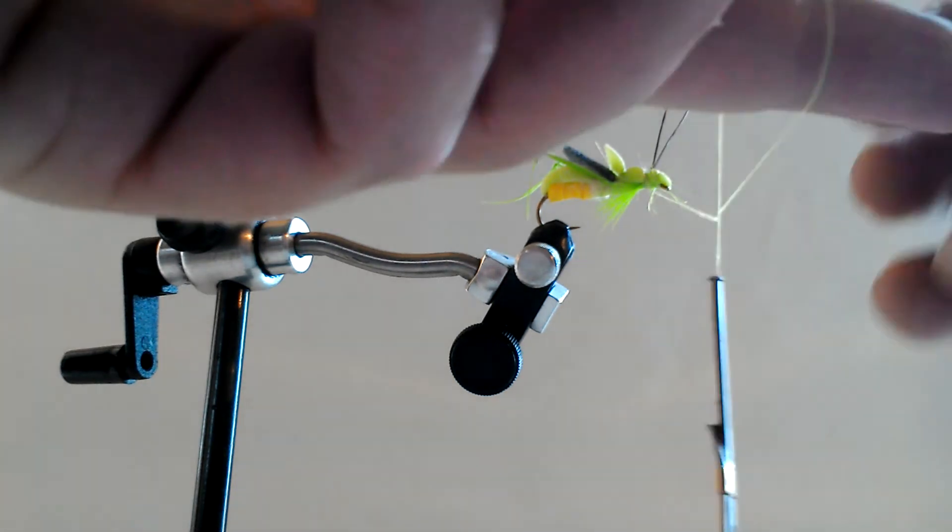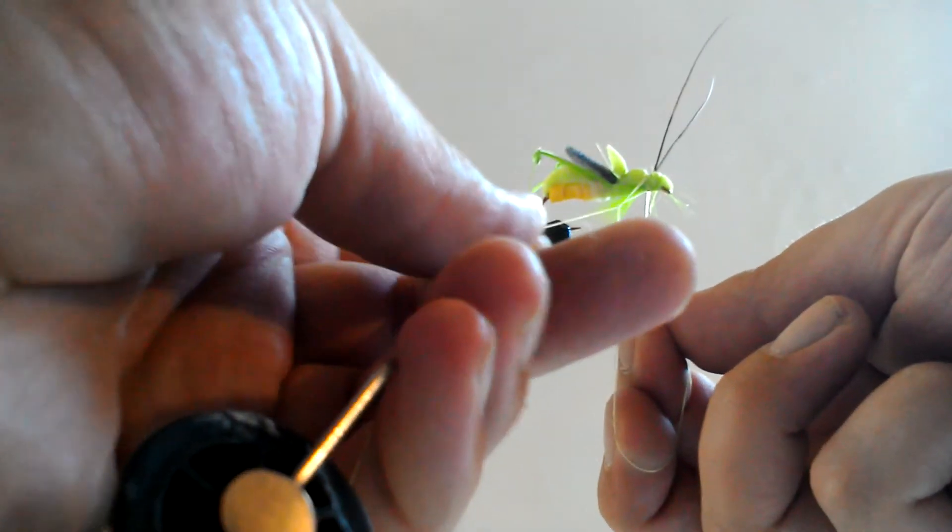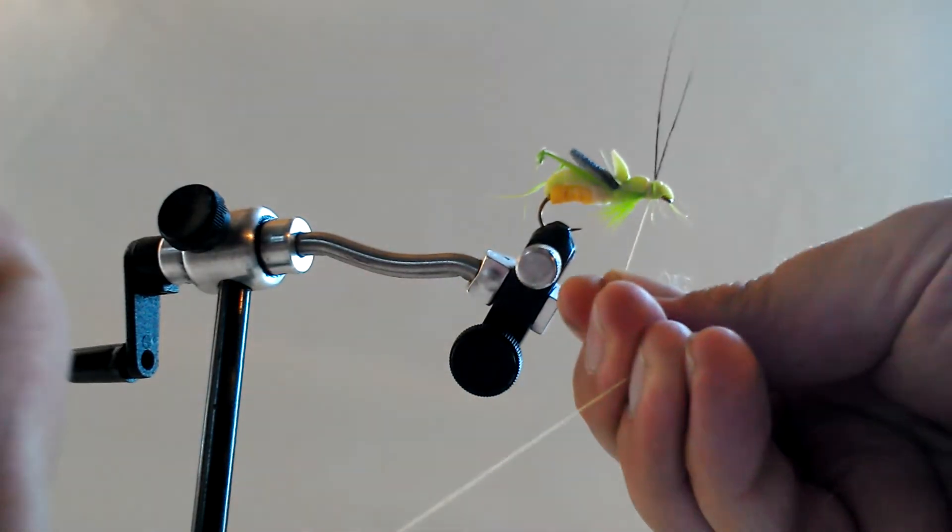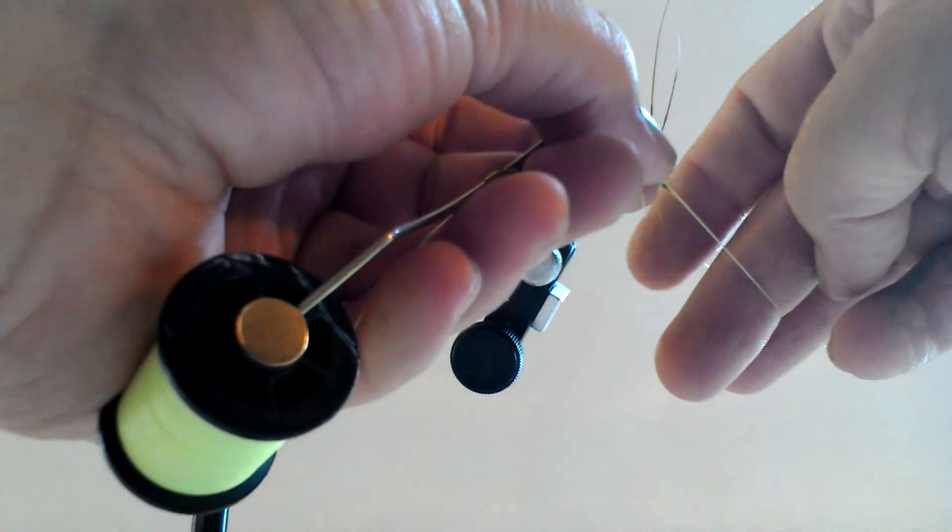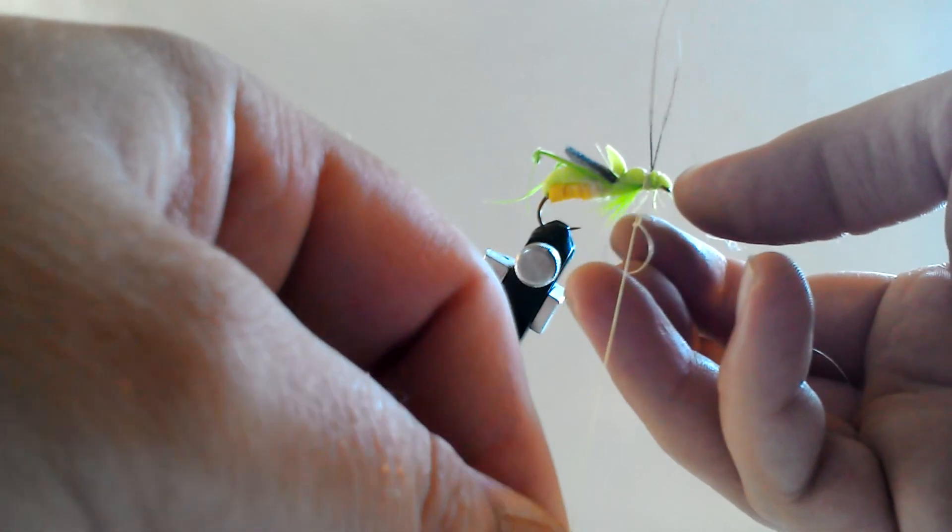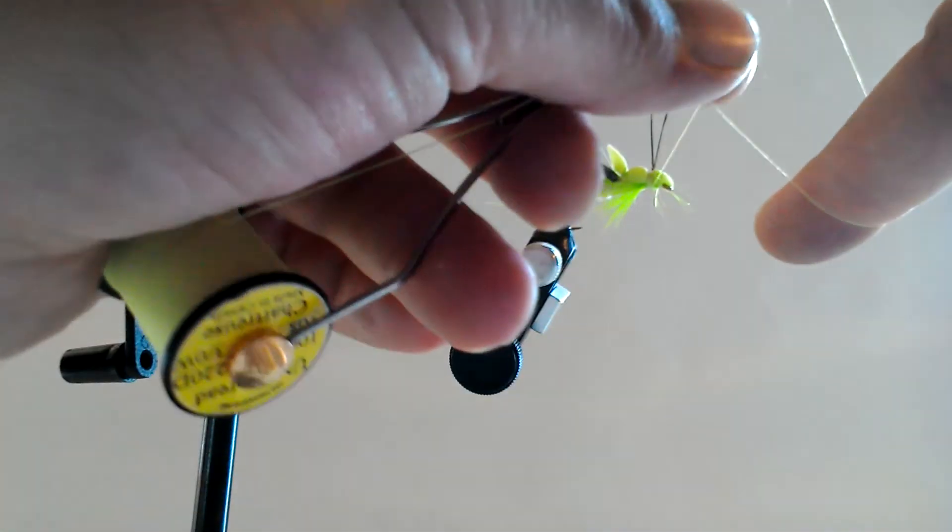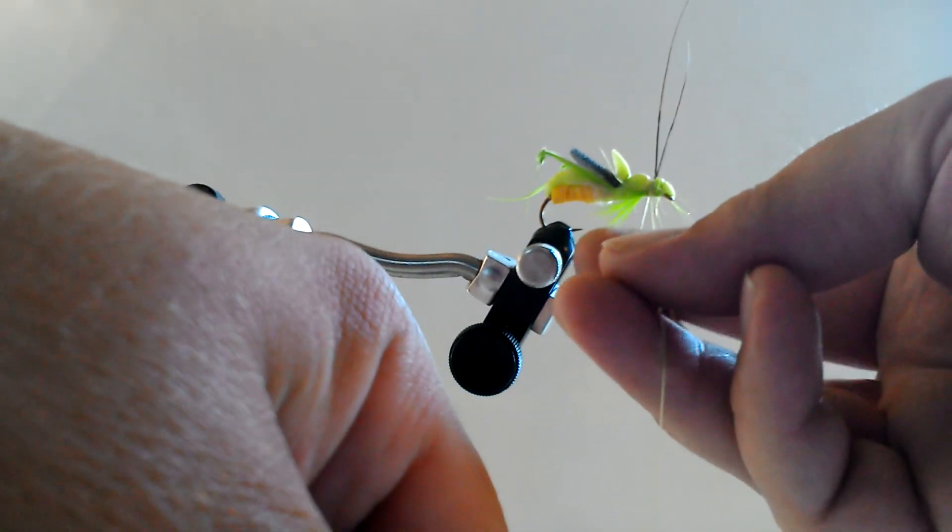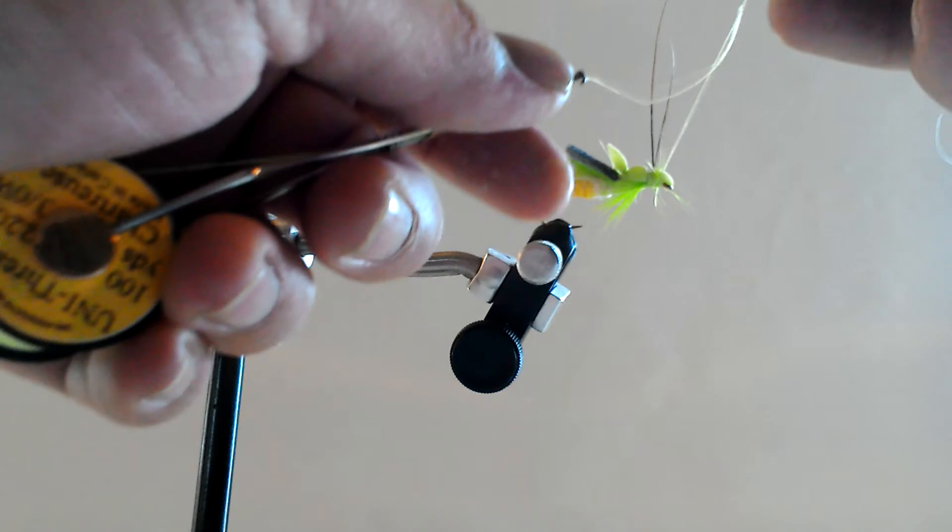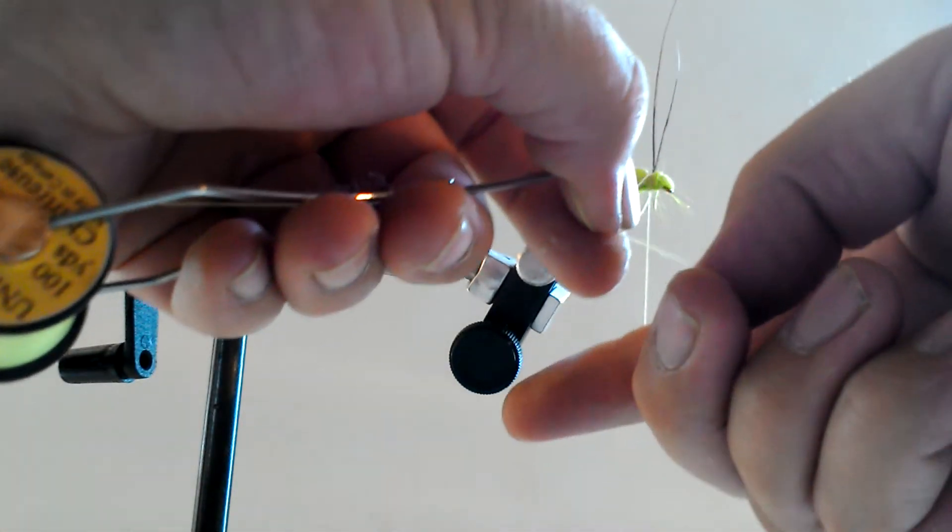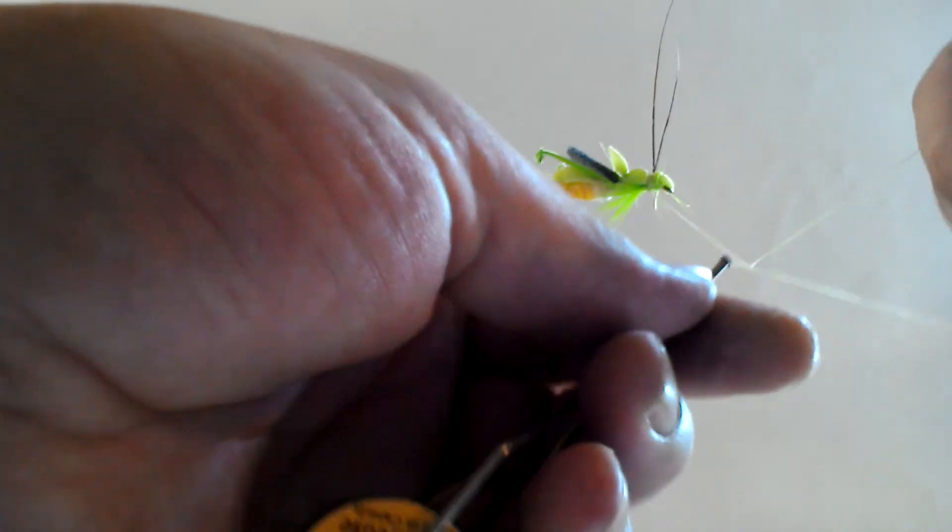I'm going to make a couple half hitches with my hand and strategically angle them around the antenna, and then pull it in tight. I'm just going to do this about four or five times. Definitely at least three.